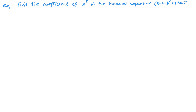Now let's look at another question — this is quite a standard type. Find the coefficient of x cubed in this binomial expansion. We don't need to worry about one part initially, but we do need to think about the expansion carefully. We want to find the x cubed term, and the way I'm going to get that is: 3 multiplied by the x cubed term from the expansion, and then add minus x times the x squared term from this expansion.